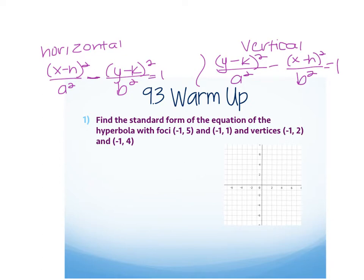The other difference was the relationship between c squared, a squared, and b squared. For a hyperbola, it's c squared equals a squared plus b squared, whereas for an ellipse it's a squared minus b squared.